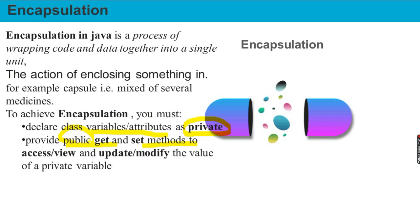What is the advantage of getter and setter methods? The getter method is used to access or view data. The setter method is used to update or modify a value.